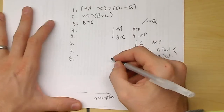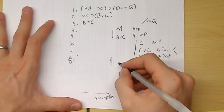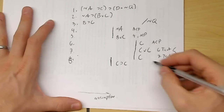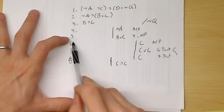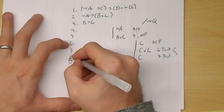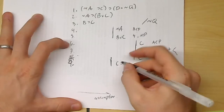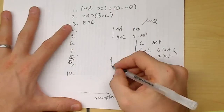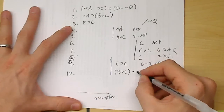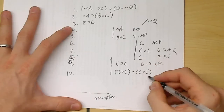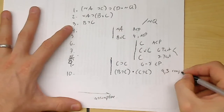Now that I have C→C, let's conjoin that with B→C. So you get (B→C)∧(C→C) — that's lines nine and three conjunction. And now that I have these, remember I have B∨C. With the constructive dilemma, if I have B∨C, that means I must have C∨C — that's lines five and ten, constructive dilemma. Of course, immediately when you see C∨C, I think tautology. So that means I've got C — that's line eleven, tautology.